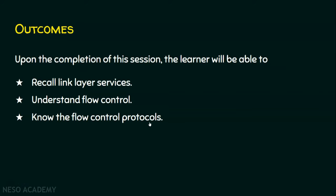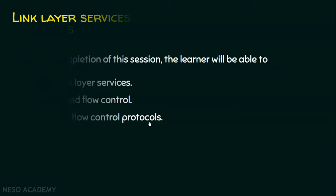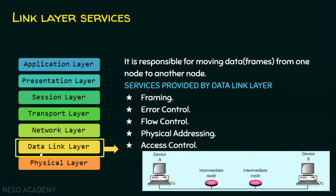Let's recollect the various link layer services. Basically, data link layer deals with frames and it is the second layer of the OSI reference model. And this layer is responsible for moving data frames from one node to another.